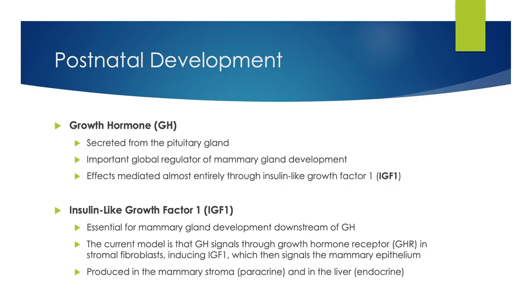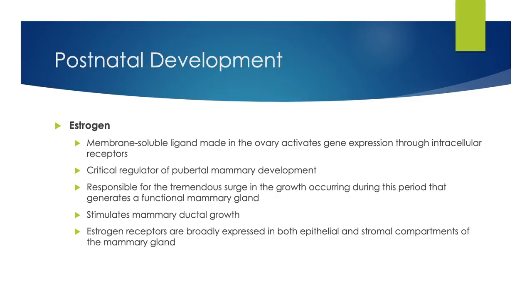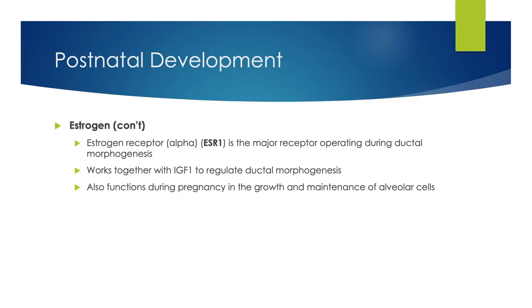IGF-1 is essential for mammary gland development downstream of growth hormone. The current model is that growth hormone signals through its receptor, GHR, in stromal fibroblasts, producing IGF-1 which then signals the mammary epithelium. IGF-1 is both produced in the mammary stroma with a paracrine effect and in the liver with an endocrine effect. Estrogen is a membrane-soluble ligand made in the ovary that activates gene expression through intracellular receptors. Estrogen is a critical regulator of pubertal mammary development, responsible for the tremendous surge in growth during this period. Estrogen receptor alpha, ESR-1, is the major receptor operating during ductal morphogenesis, and estrogen and ESR-1 work together with IGF-1 to regulate ductal morphogenesis.